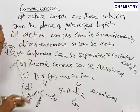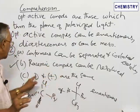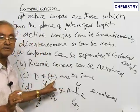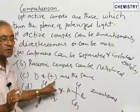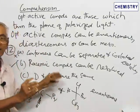And about the third statement, capital D and plus are the same. It is not correct. Capital D represents the configuration whereas the plus or minus represents the sign of rotation. The sign of rotation and configuration, D can be plus or D can be minus.